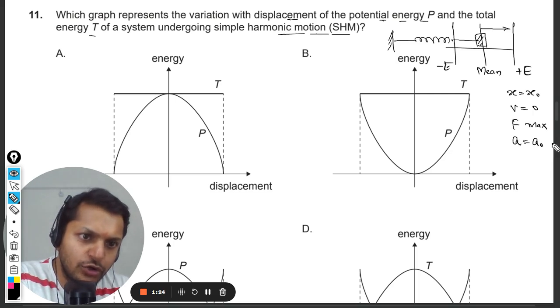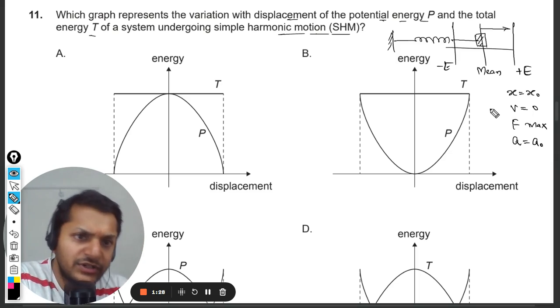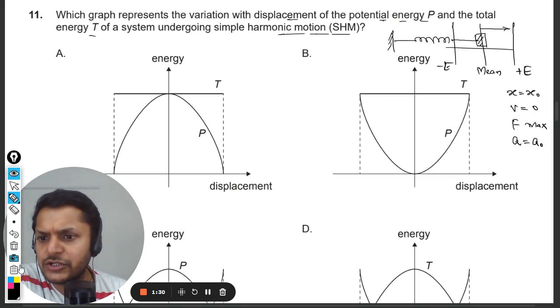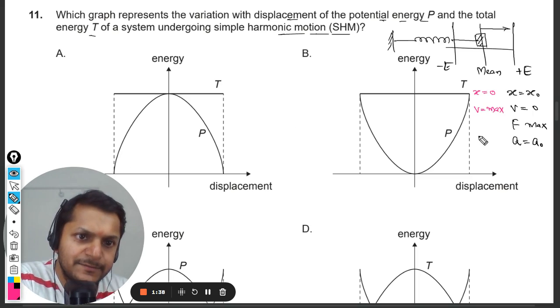And in the mean position, I would be telling you about the mean position also. In the mean position, you see the displacement is zero. So the velocity becomes max, the force becomes zero, the acceleration becomes zero.